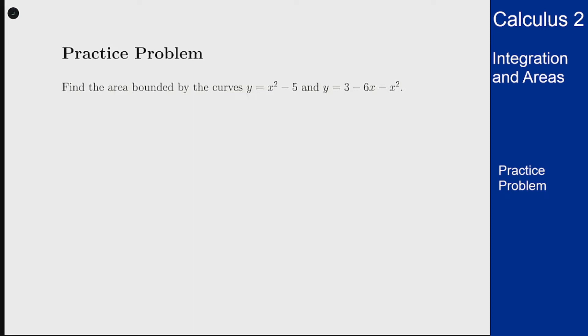To find the intersection we want to set the two curves equal to each other, so we set x squared minus 5 equal to 3 minus 6x minus x squared and then we solve.